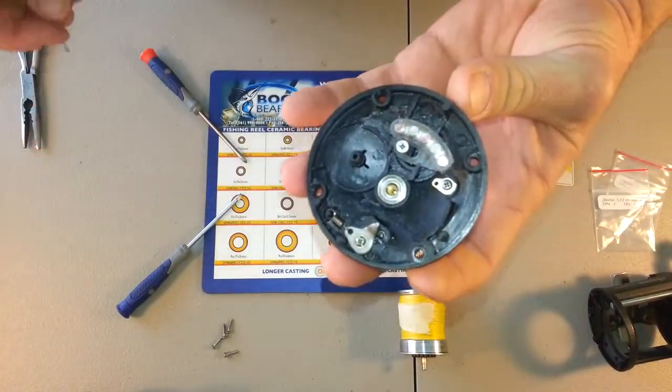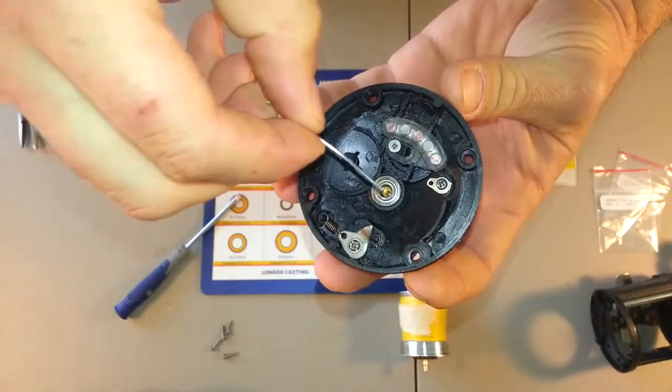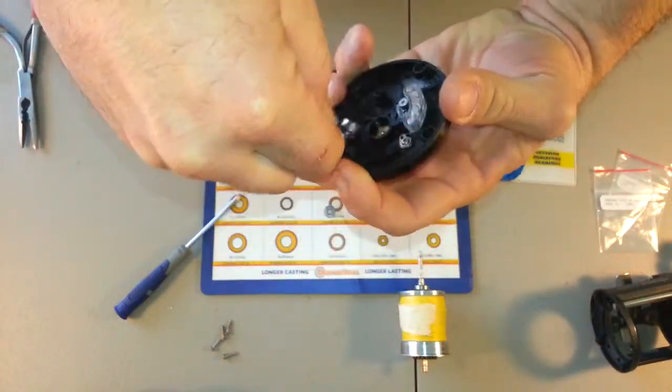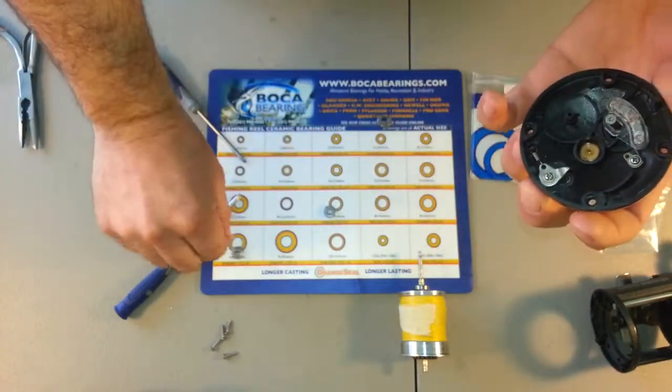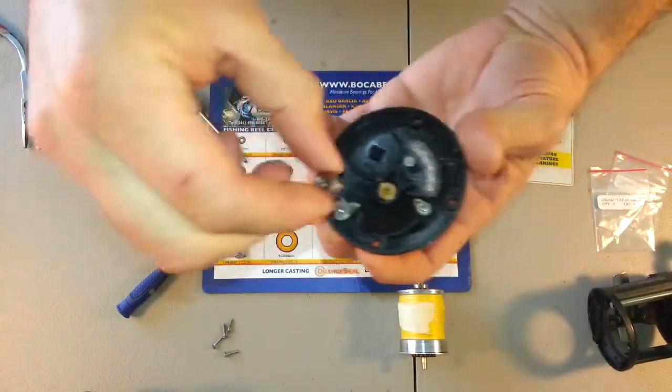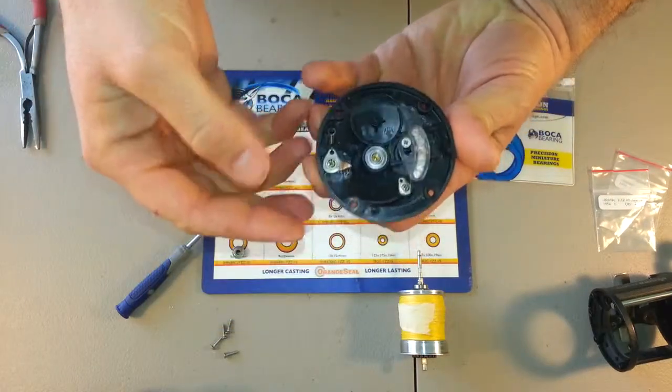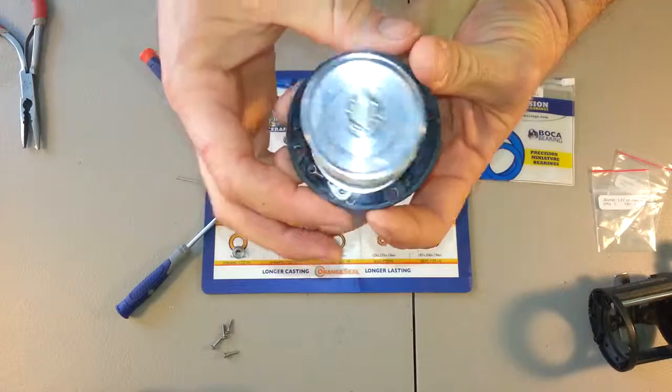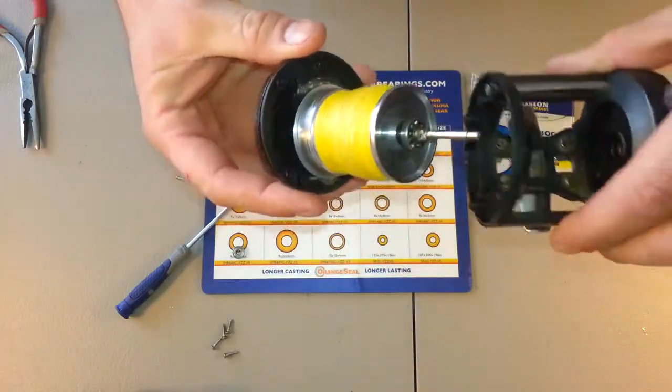Next up, I have the side plate. I'll get my bearing puller, slip it under the bearing, pop it out, get my replacement bearing, pop it right in, and I'll be able to put the spool and the shaft back on.